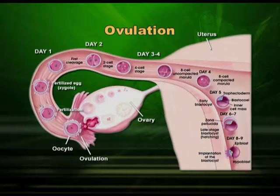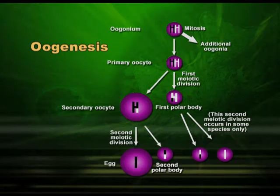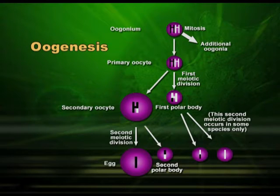And once implanted, the placenta is formed and further divisions will take place and a baby will form out of this in due course of time. In this slide, I wish to show you a schematic representation of oogenesis. As I told you, the division will begin from the oocyte. There are so many oocytes in the ovary. Some will become functional before the other, and these functional oocytes will be called primary oocytes. And this primary oocyte will undergo meiotic division.